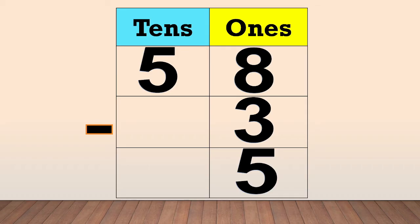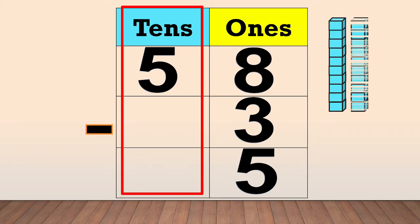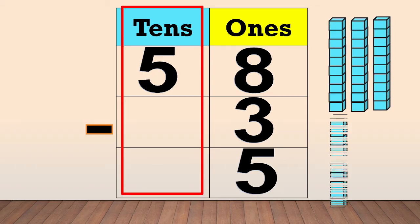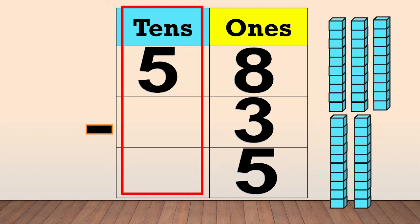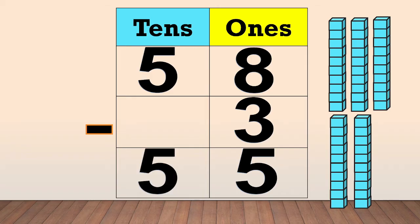Now, we subtract the tens. We have 5 tens — 1, 2, 3, 4, 5. But there is no number in the subtrahend in the tens column. That means there is nothing to subtract, so we bring down the 5 tens. So, 58 minus 3 equals 55.